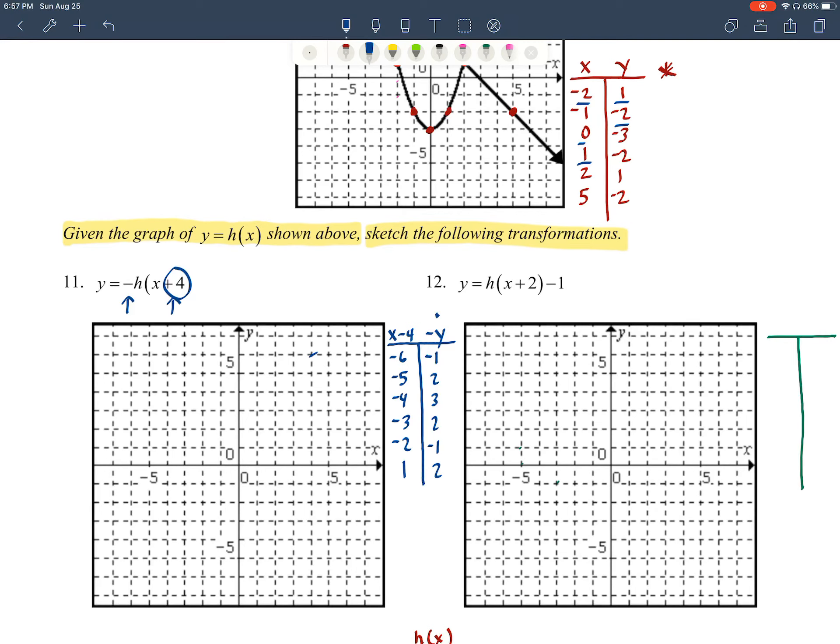Then our next job here is to take it and plot the points. So we'll start out with negative 6, negative 1. We'll have negative 5, positive 2, negative 4, positive 3, negative 3, positive 2, negative 2, negative 1, and then the point 1, 2. Make sure you connect them in the same order there, so it was that parabola shape that came here. Notice it's flipped now, and because the orientation has changed, now it should be finishing going up to the right. So that's our new shape there.